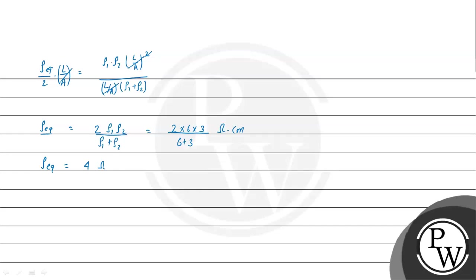So rho equivalent will be equal to 4 ohm-centimeter. Hence, we can say that after combining the two wires in parallel, rho will be equal to 4 ohm-centimeter. This is the final answer of the given question. I hope you understood the solution. Best of luck. Thank you.